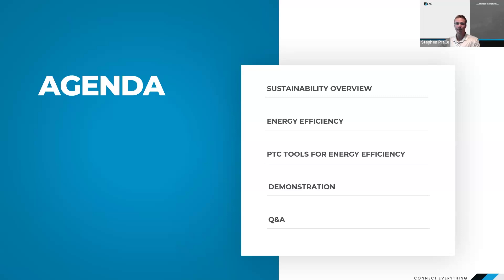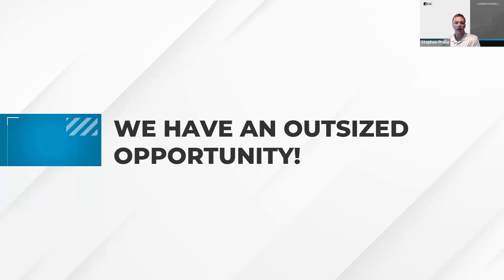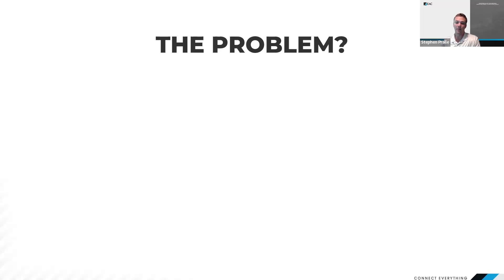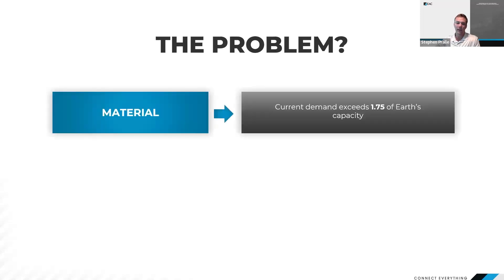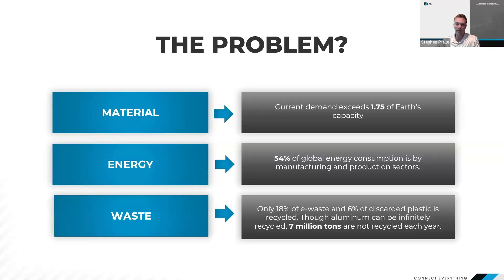Feel free to put questions in the chat as we go along. As we know, discrete manufacturing must change if we want to serve our needs without sacrificing the needs of future generations. Because of this, industry today is pushing for more sustainable processes for companies all around the world. At first glance, improving product sustainability appears costly and risky, but the truth is that this is a huge opportunity. In our world today, there is a problem in how manufacturing companies are handling materials, consuming energy, and recycling waste. Our demand for material is exceeding the Earth's capacity, and more than half of global energy consumption comes from manufacturing and production sectors, while only a very small percentage of waste and scrap is actually recycled.